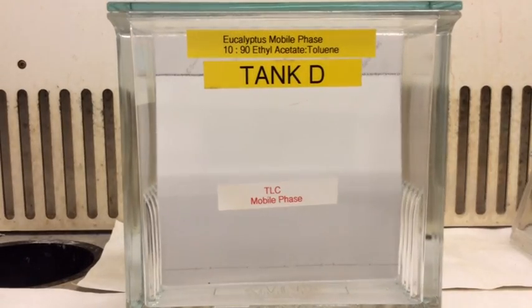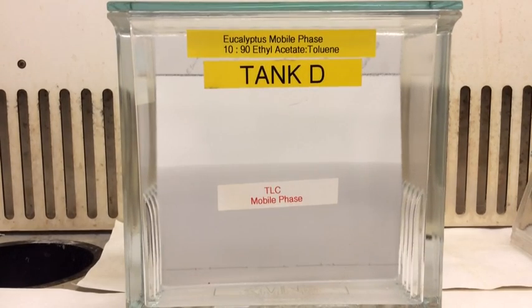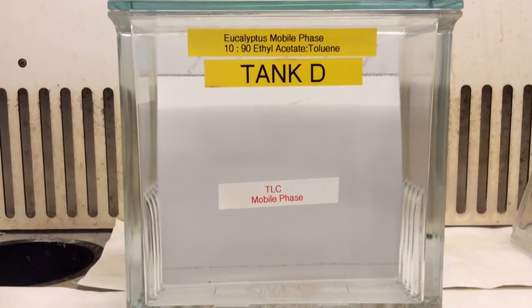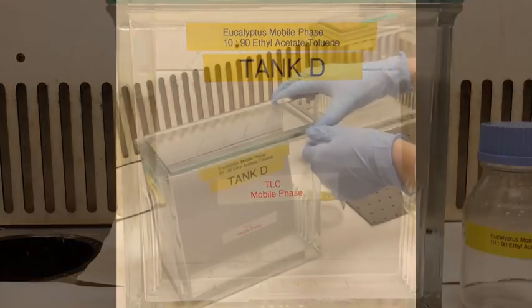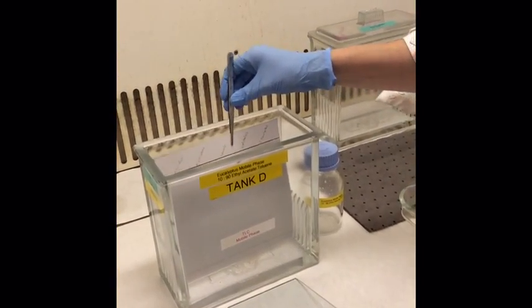Depending on the solvent system, it could take 30 minutes to an hour for the plate to fully develop. Once the plate has developed, carefully remove the TLC plate from the tank and allow it to air dry.